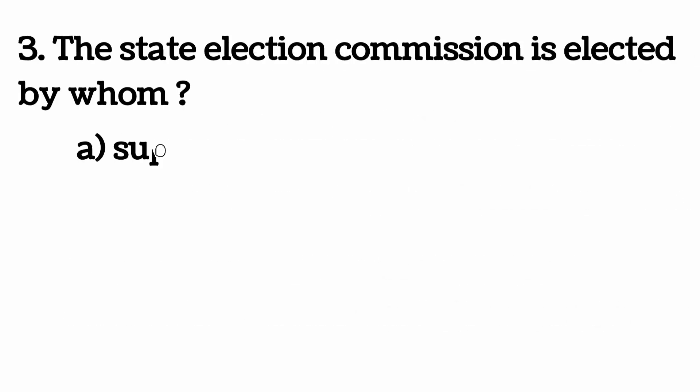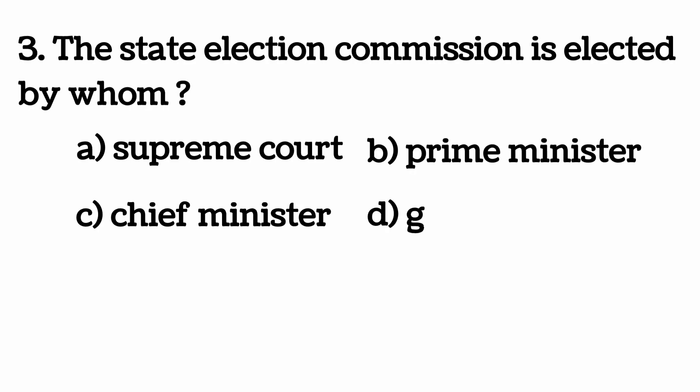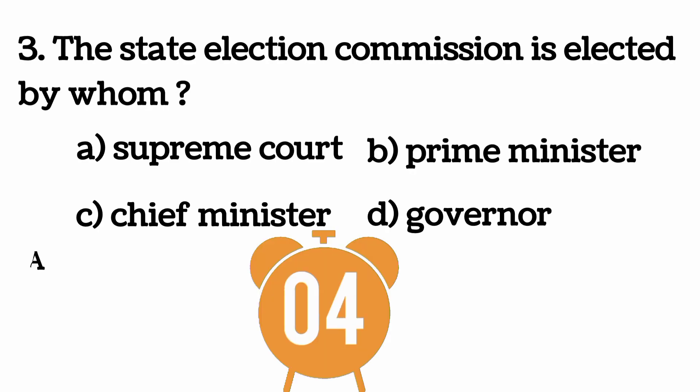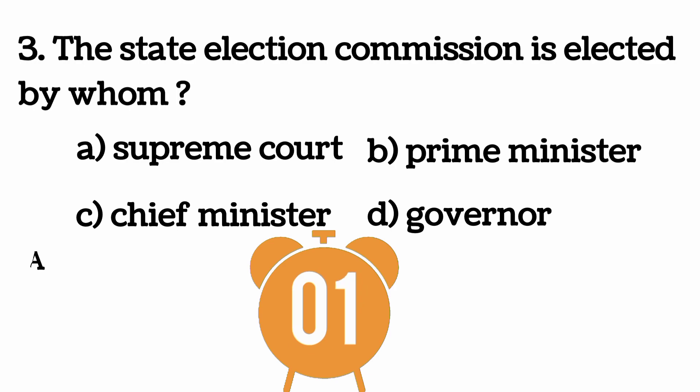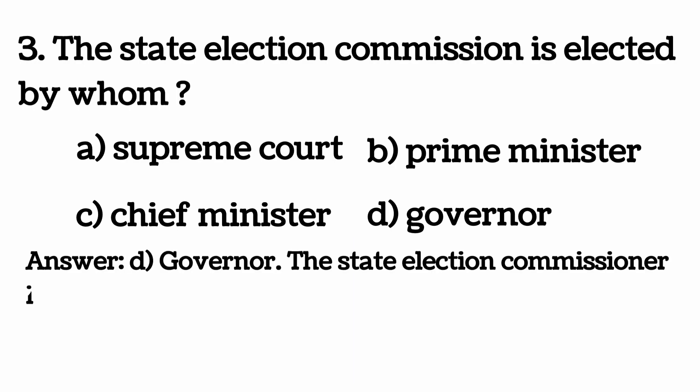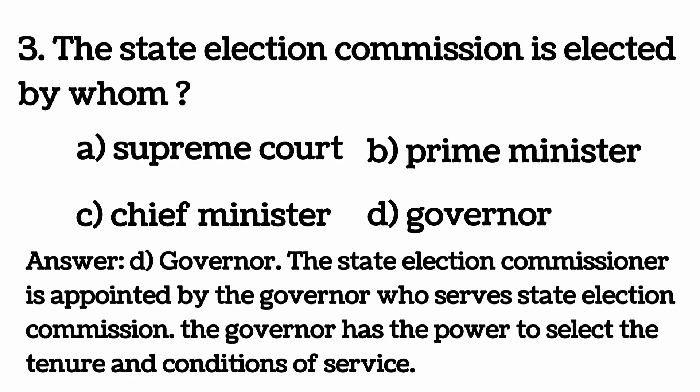The State Election Commission is appointed by whom? Answer D: Governor. The State Election Commissioner is appointed by the Governor, who serves the State Election Commission. The Governor has the power to select the tenure and conditions of service.